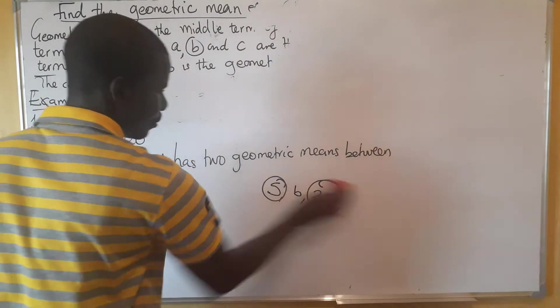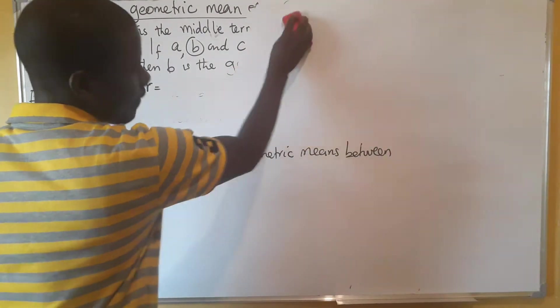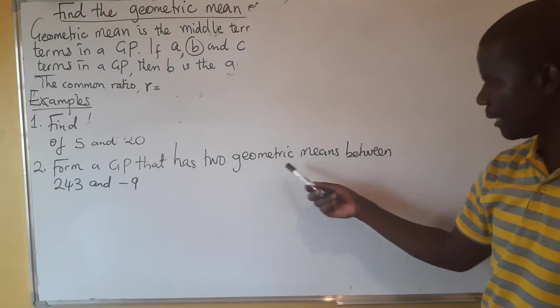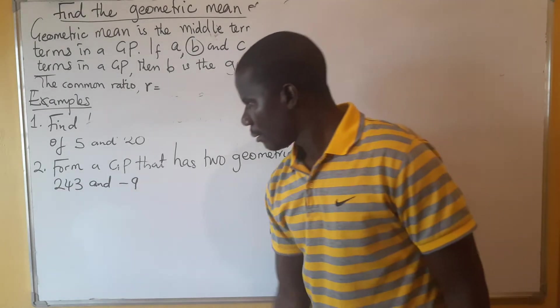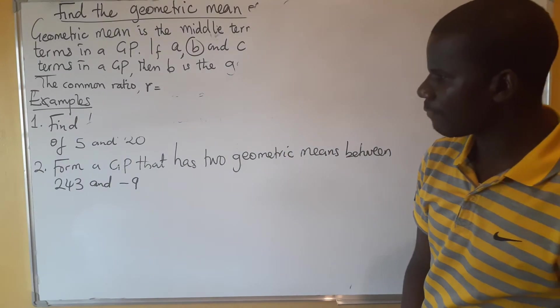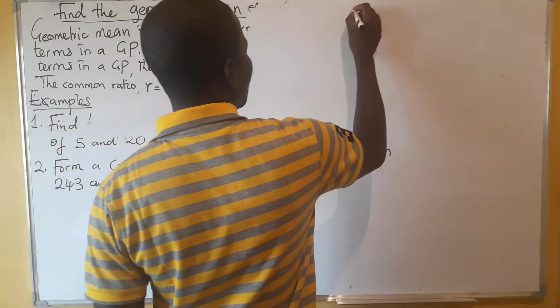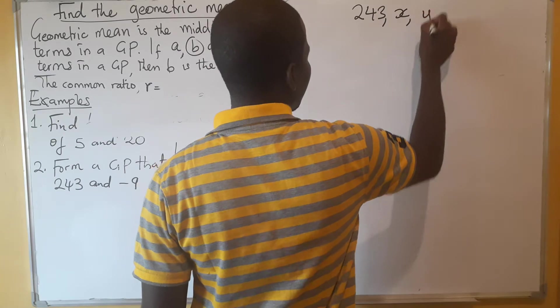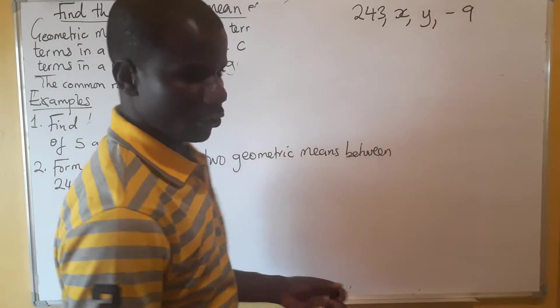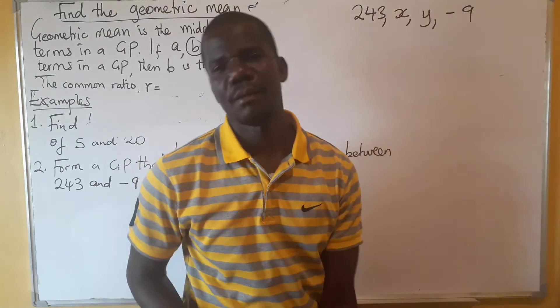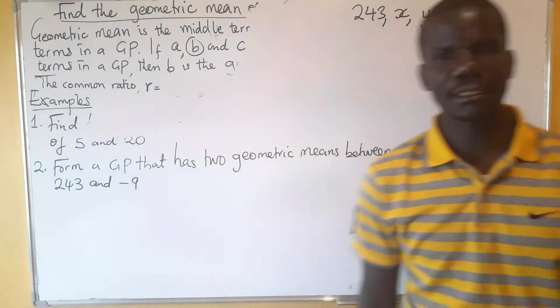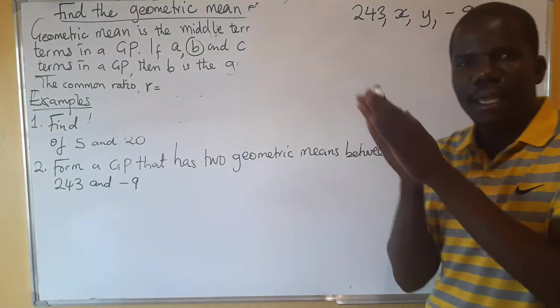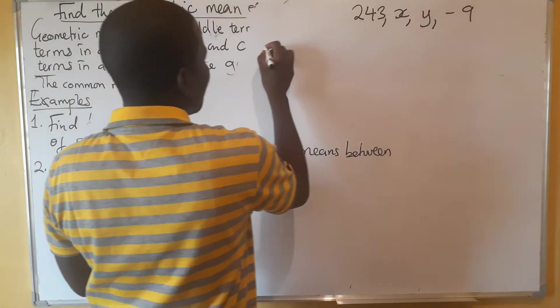I'm trying to create space for this question. So what are we supposed to do now? The question is asking: form a GP that has two geometric means between 243 and negative 9. So we should have 243, comma, then those geometric means that we are talking about - x and y, comma, negative 9. So what are we supposed to do in this case? We just have to go back to the nth term formula, which formula am I talking about? This one for the GP.